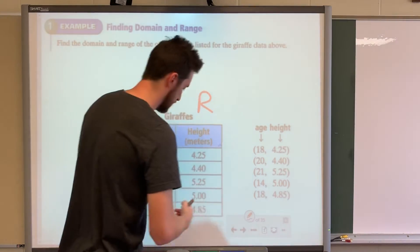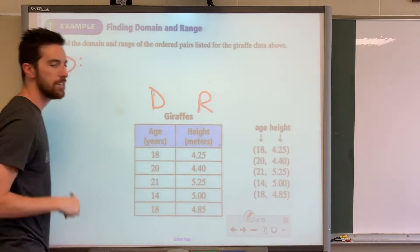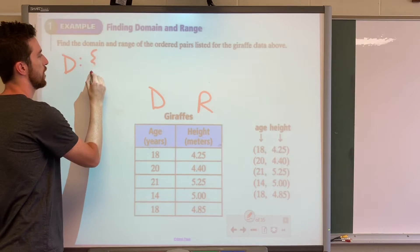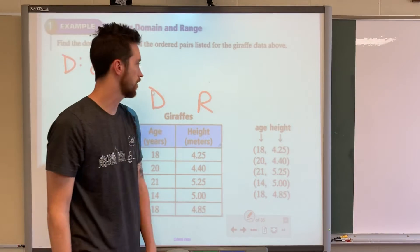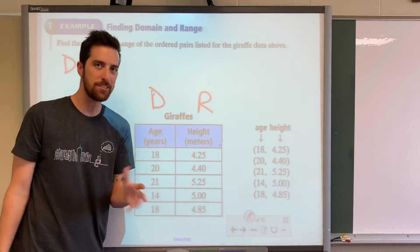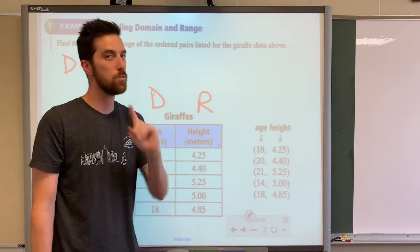Now when you list these, you're going to list them like this. D, colon, and then you've got a squiggly parentheses. It kind of looks like a sideways mustache for a cartoon. So you list all the domain values from least to greatest. Now if it's in there more than once, which we have here, you only list it once.